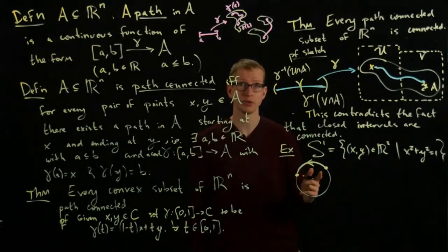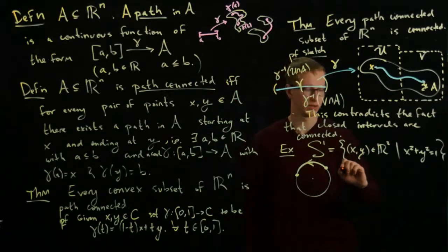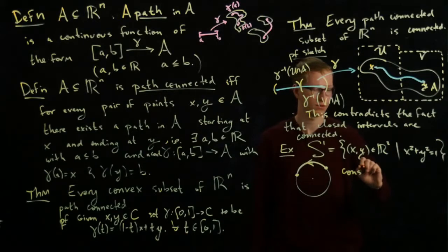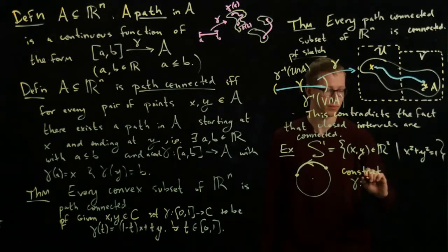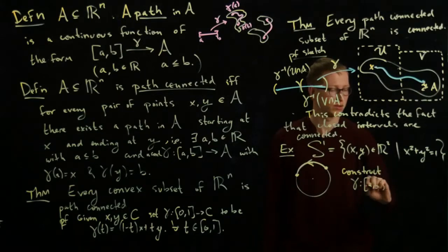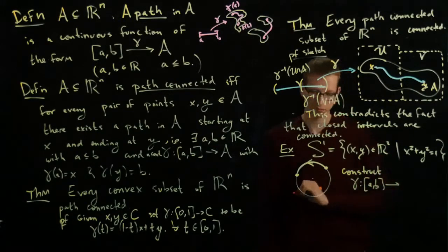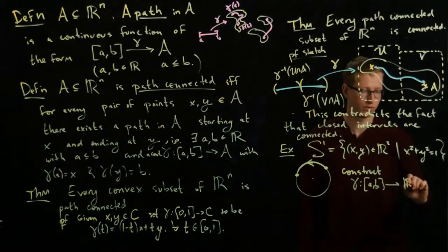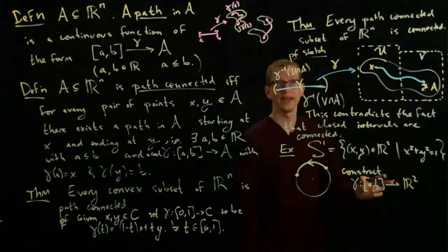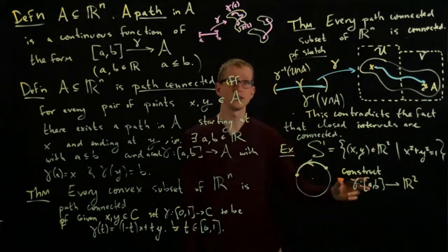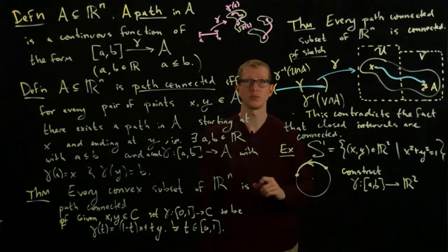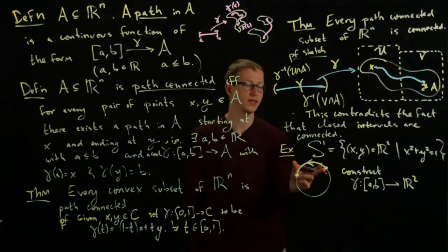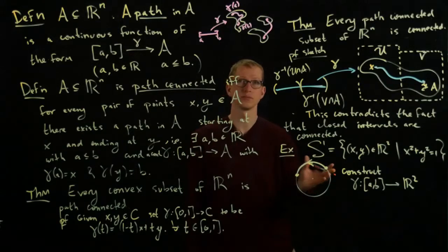And secondly, you should prove that this parametrization is in fact a continuous function. Because such a parametrization is a function, we'll have to construct some gamma between some numbers to R2. We know that this function is continuous if and only if its projections are continuous. So you'd have to check that each of the projections are continuous, and you can sort of see that these projections are some combination of sine and cosine functions.